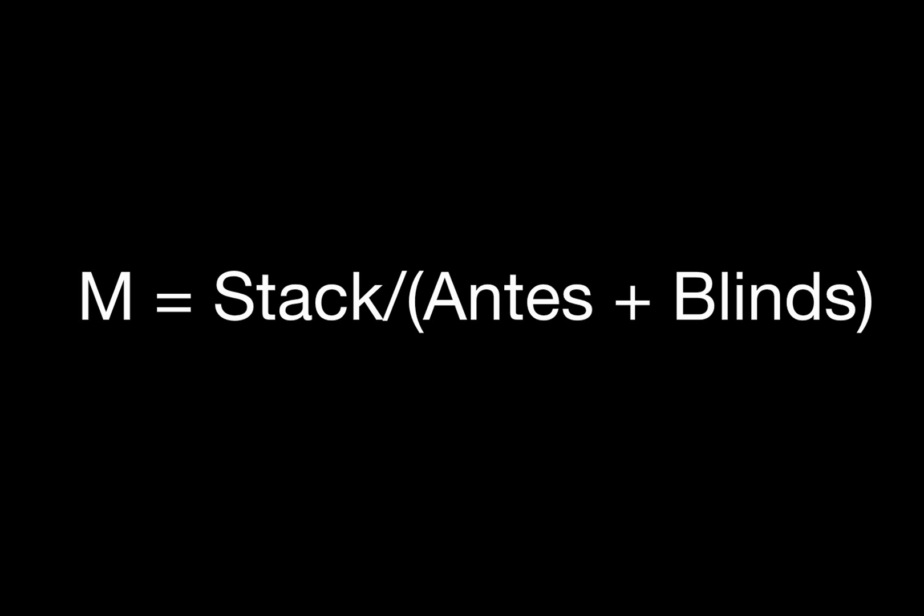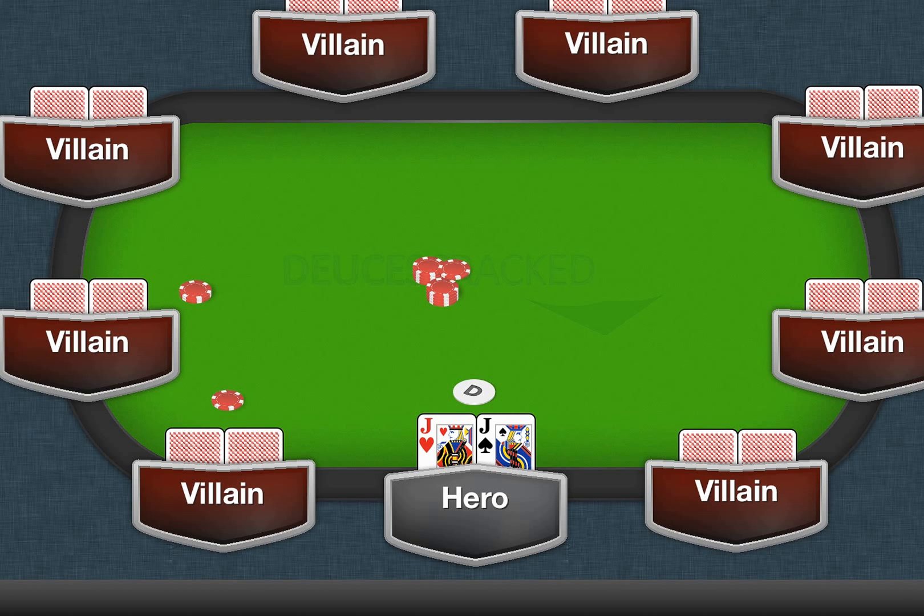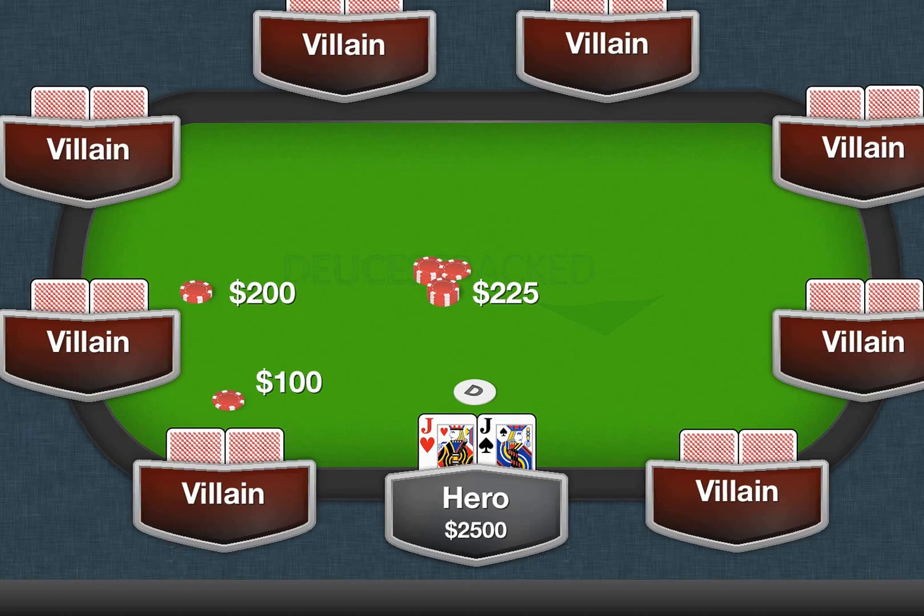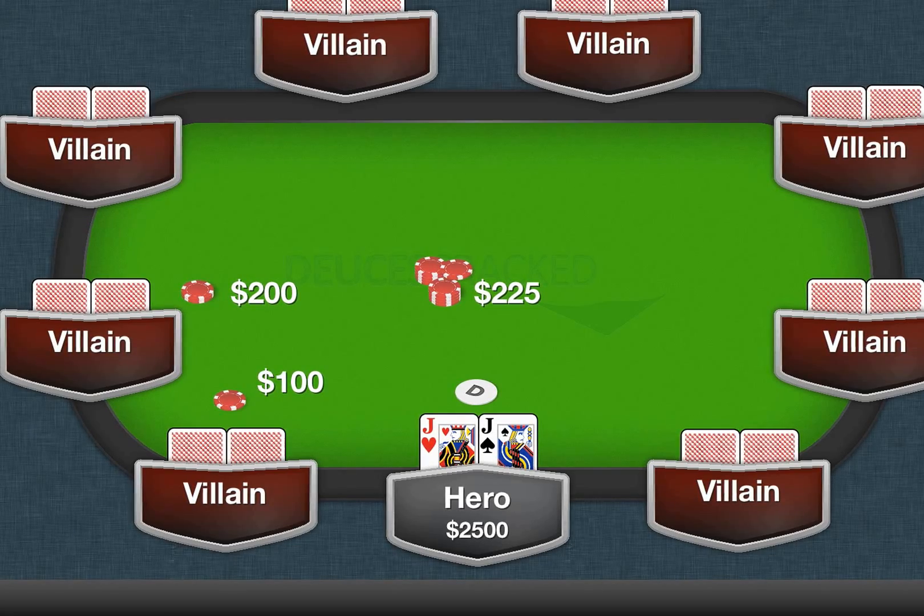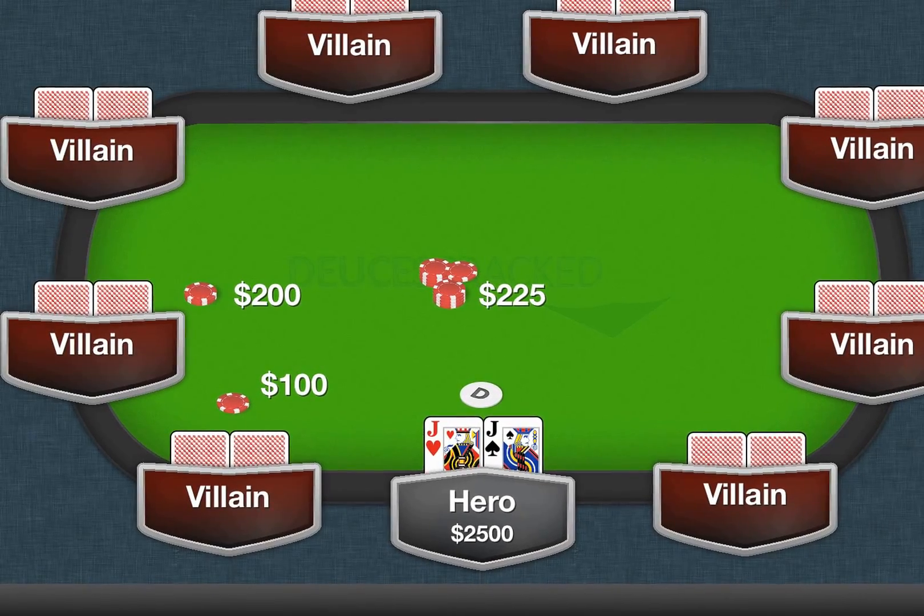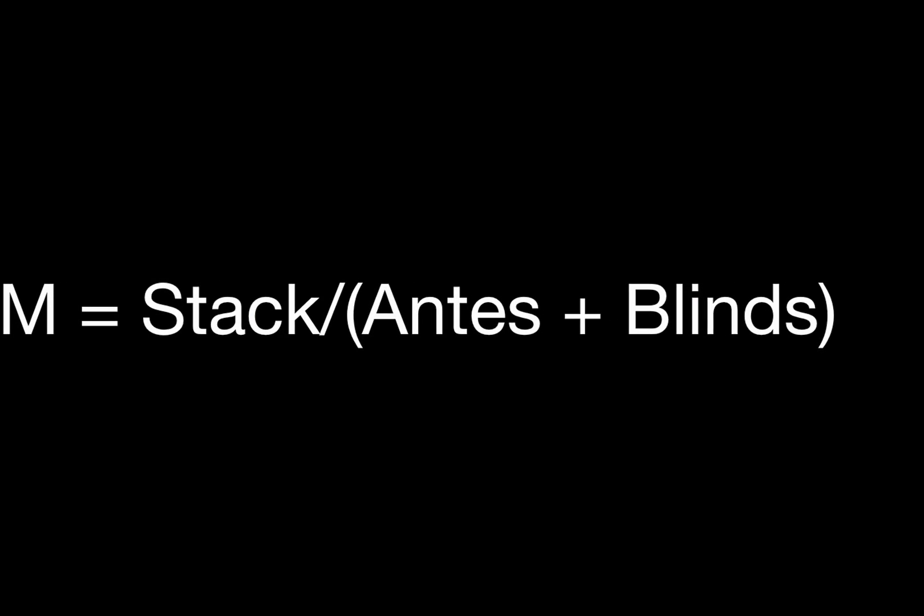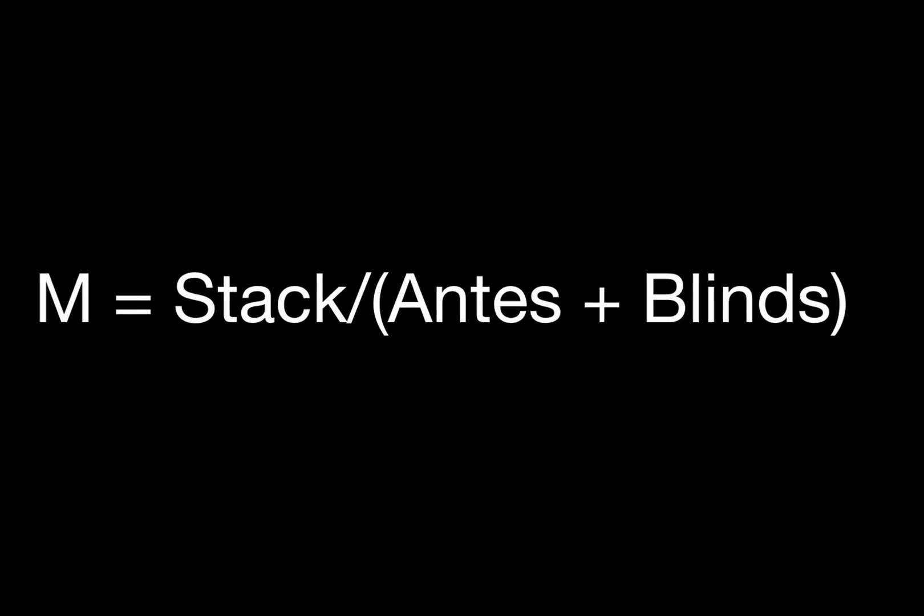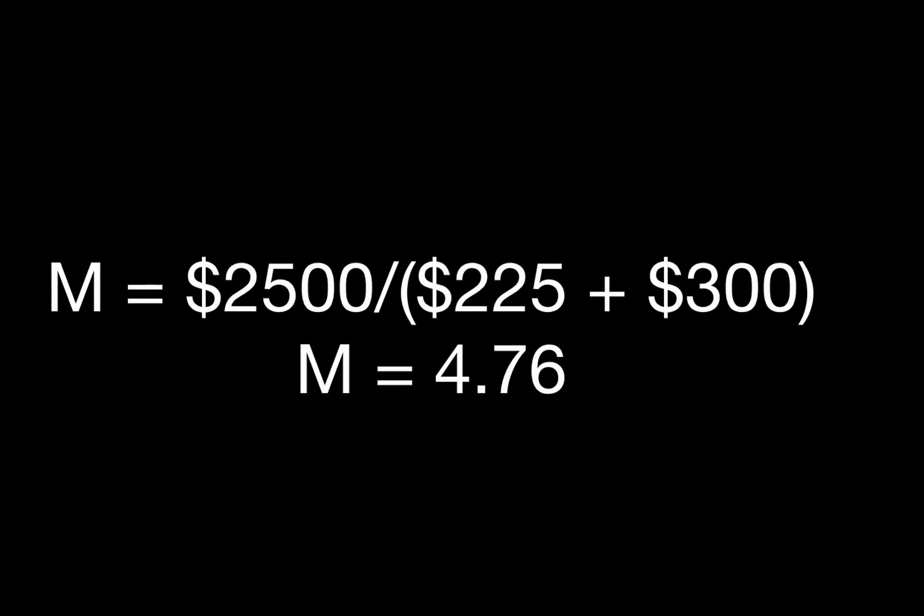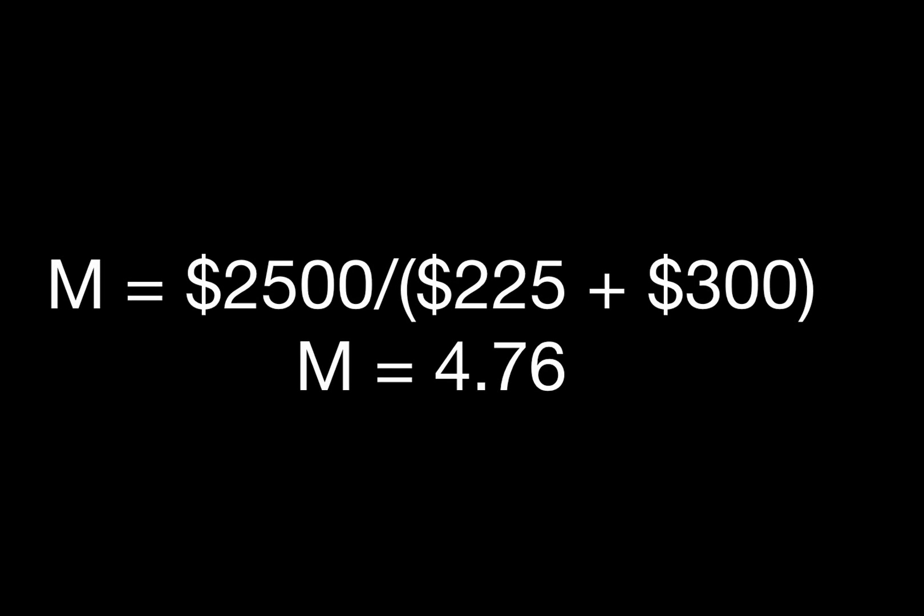So to do a quick example here, we've got pocket jacks on the button, a couple of numbers pop up here. We see we're playing 100-200 with a 25 chip ante, and there's 2500 in our stack. So, that would mean our stack is 2500, the antes, 25 times 9 is 225, and the blinds are 100 and 200, which is 300. So it's 2500 over 225 plus 300. Our M is 4.76.